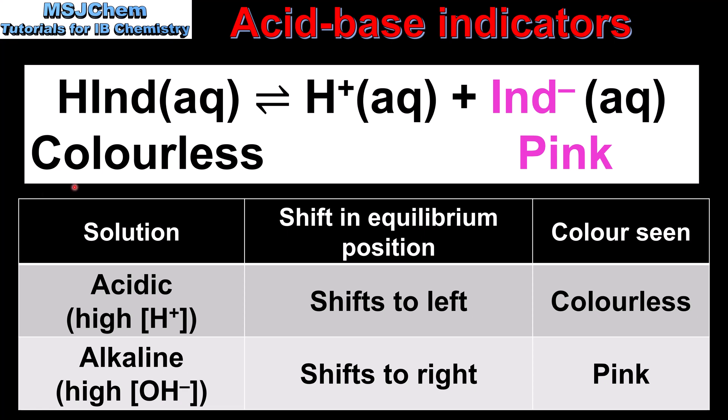In an acidic solution, which has a high concentration of hydrogen ions, the equilibrium position will shift to the left, in the direction of the unionized form of the weak acid, which is colorless. So in an acidic solution, phenolphthalein is colorless.